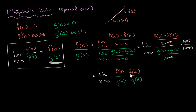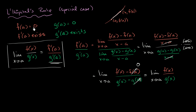And I think you see where this is going. What is f(a) equal to? We assumed f(a) is equal to zero — that's why we're using L'Hôpital's Rule from the get-go. Similarly, g(a) is equal to zero. So those terms drop out, and this simplifies to the limit as x approaches a of f(x) over g(x). We just showed that if f(a) equals zero, g(a) equals zero, and both derivatives exist, then f prime of a over g prime of a equals the limit as x approaches a of f(x) over g(x) — a fairly straightforward proof for this special case of L'Hôpital's Rule.